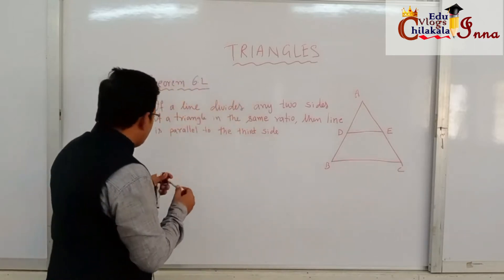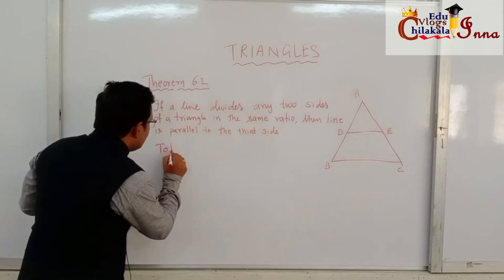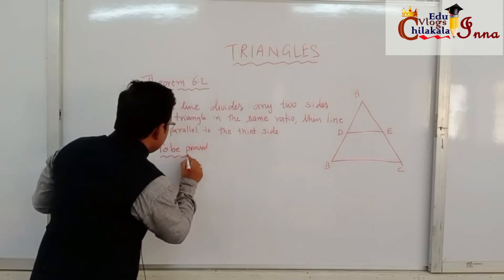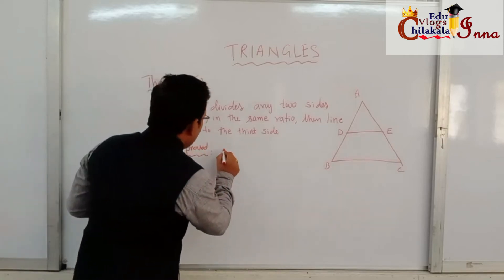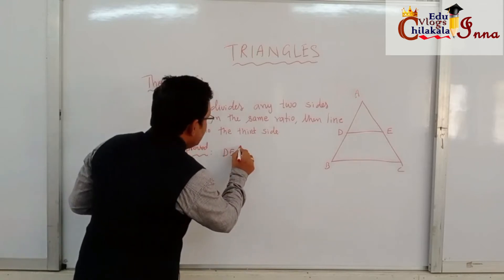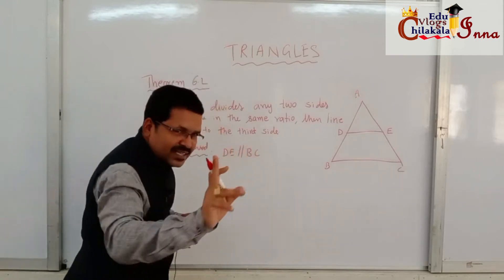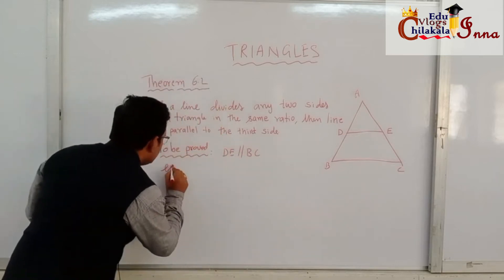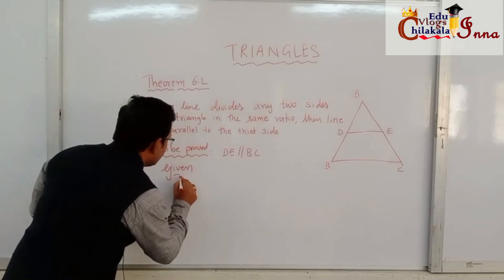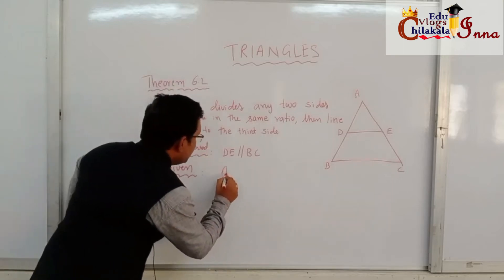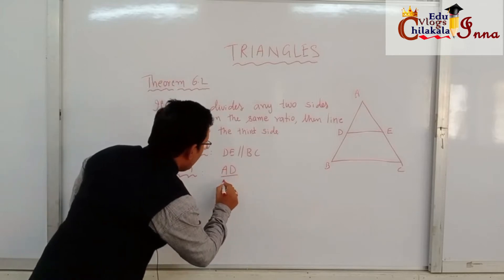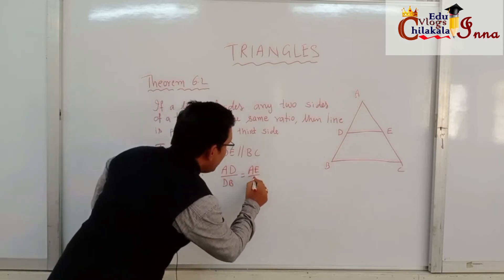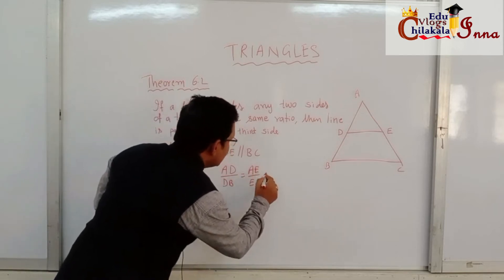So what needs to be proved? We need to prove that DE is parallel to BC. And what is given to us? What is given is AD/DB = AE/EC.